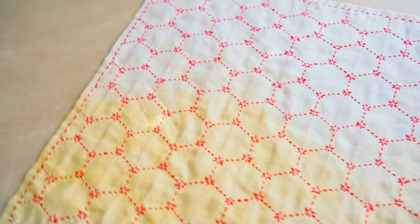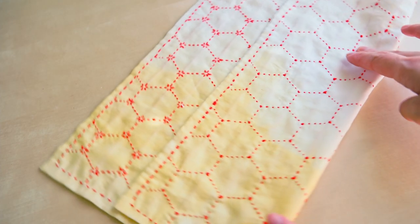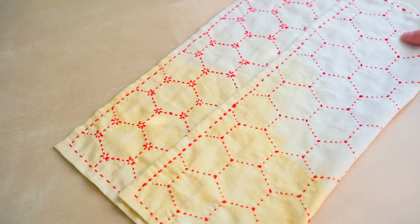By hiding the extra threads between two layers, your hana fukin will also look beautiful from both sides.